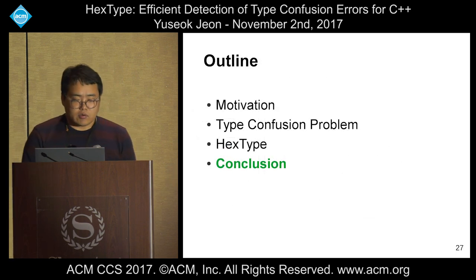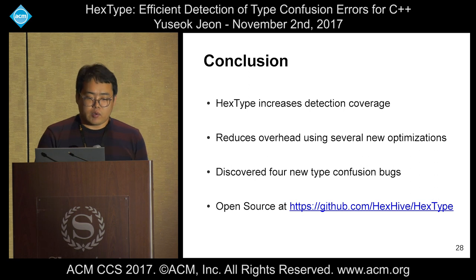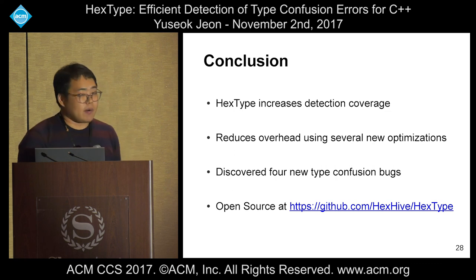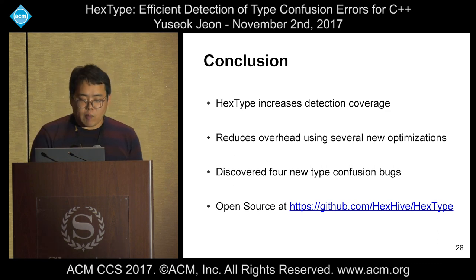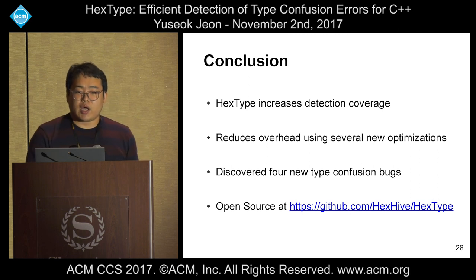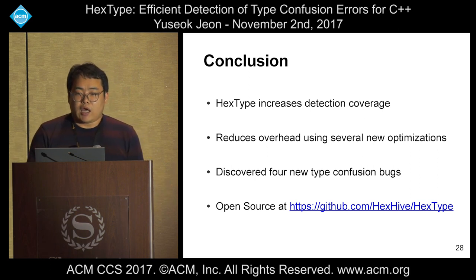To wrap up, to overcome previous solutions we propose HexaType, which increases detection coverage and reduces overhead using several new optimizations. We also discovered four new type confusion vulnerabilities. Our prototype is currently released and you can check it at the provided link. Thank you very much. Are there any comments or questions?